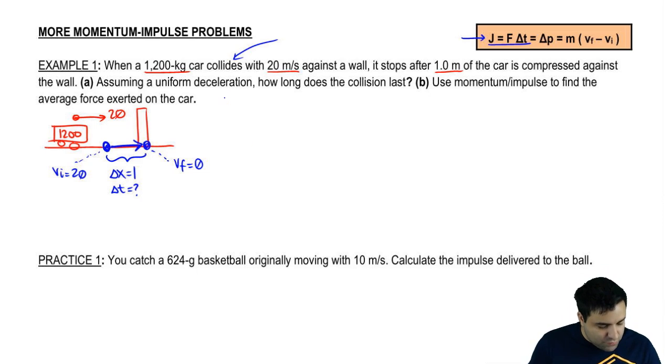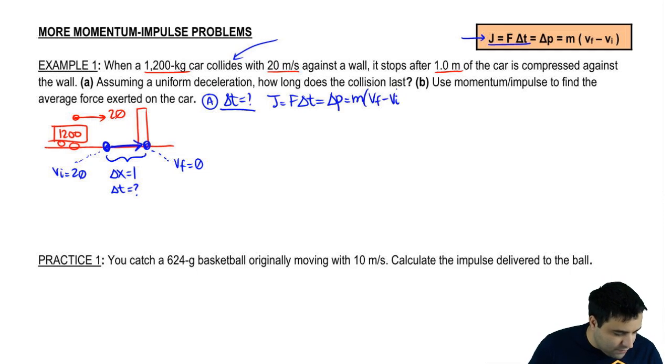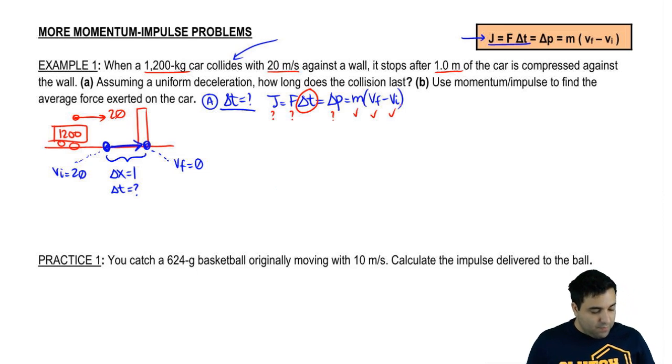But this equation is not going to work because once you write it out, let me put here that part A, we're looking for delta t. Once you write it out, J equals F delta t, delta p equals m v final minus v initial, you realize that you don't have J, you're looking for t, you don't have F, you don't have delta p, and you have these three guys here. But that's not enough to solve because if you try to set this up like this, F delta t is what I'm looking for, equal to the right side which is everything I have, you will notice that I'm missing F here. And without F, I can't solve this. So this is not solvable using this equation.